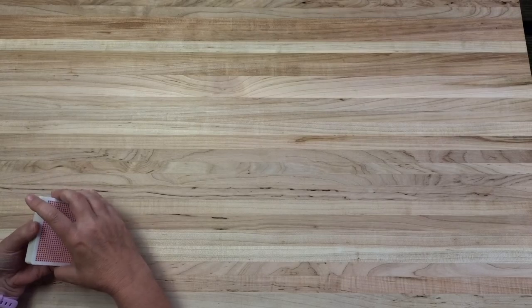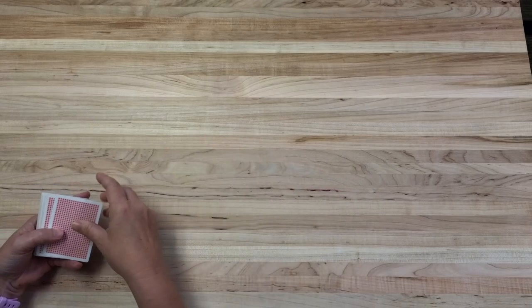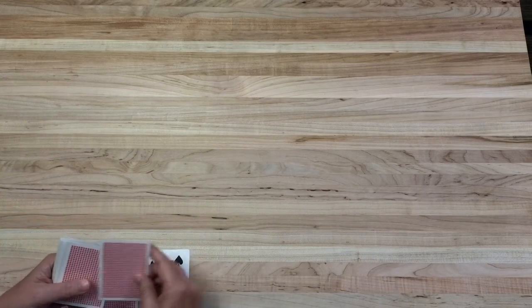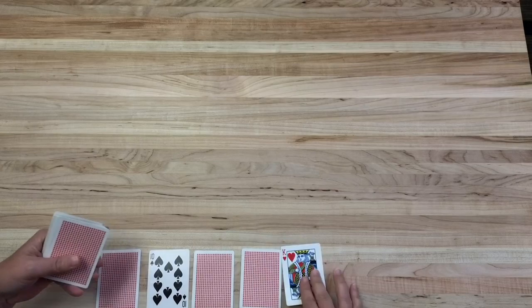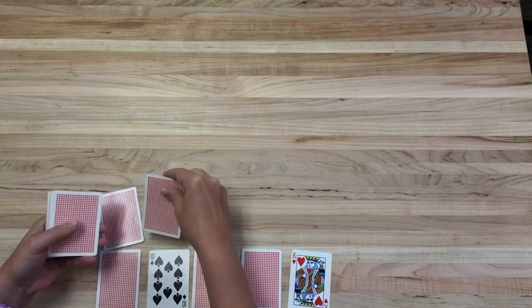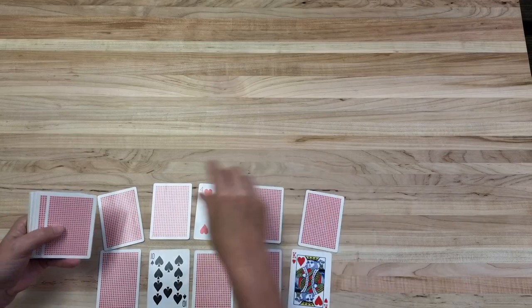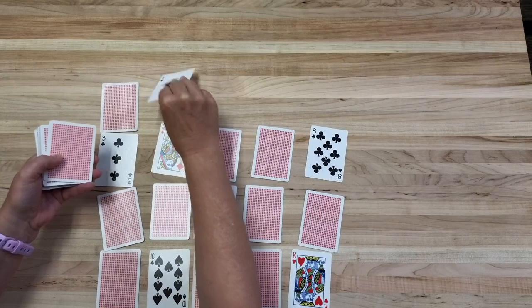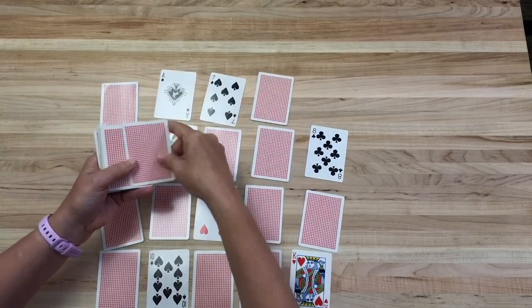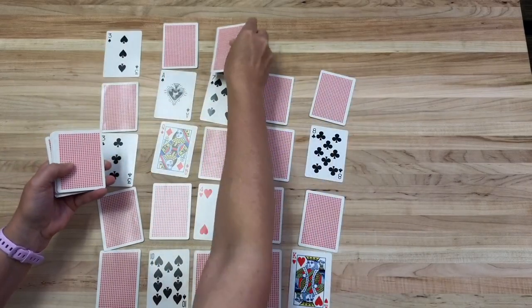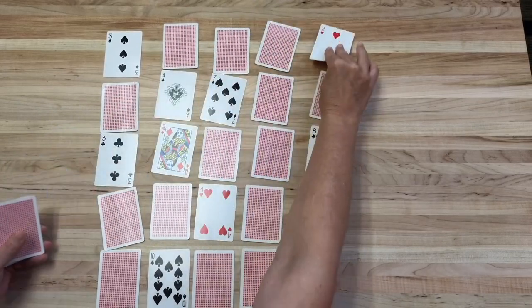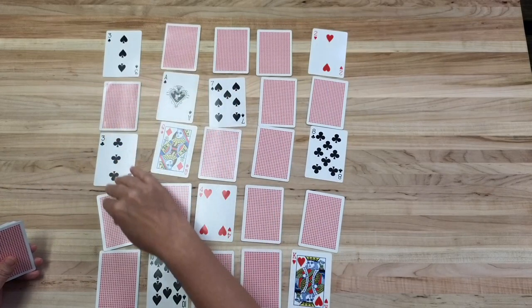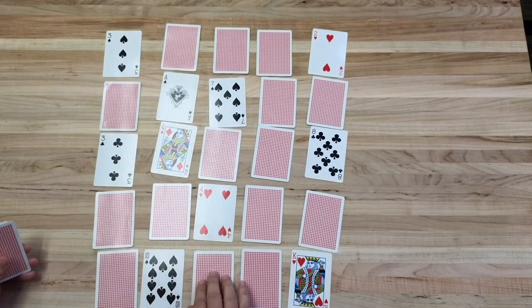You're going to have one student randomly put out a five by five grid of cards, so they can put things up or down. It doesn't really matter. They want to do a variety of things. Okay, so once they've set out this five by five grid, you're going to say, 'Oh, this is too easy. I need to make it a little bit harder.' And this is where you're going to add a parity check.